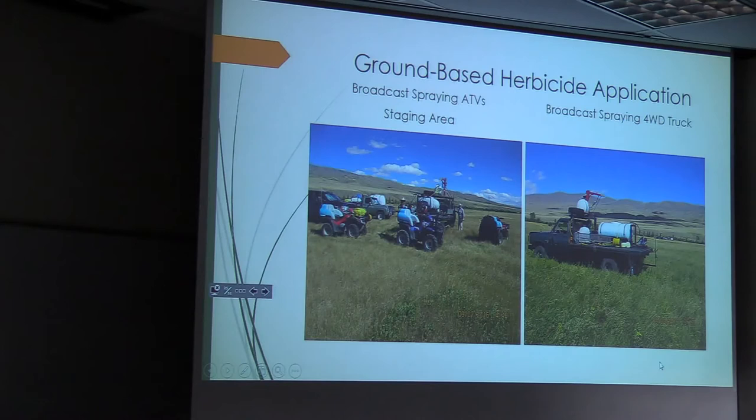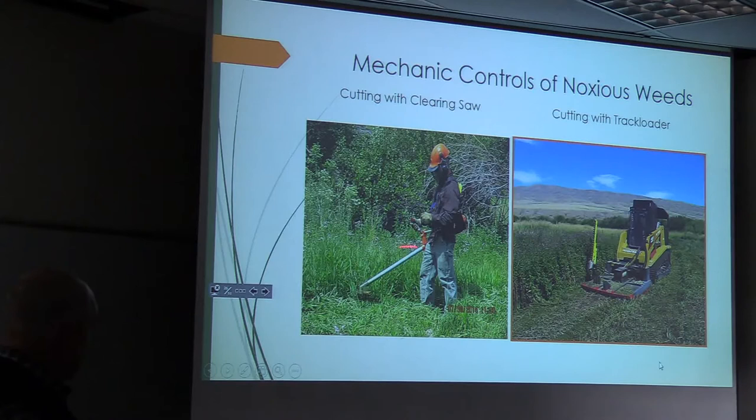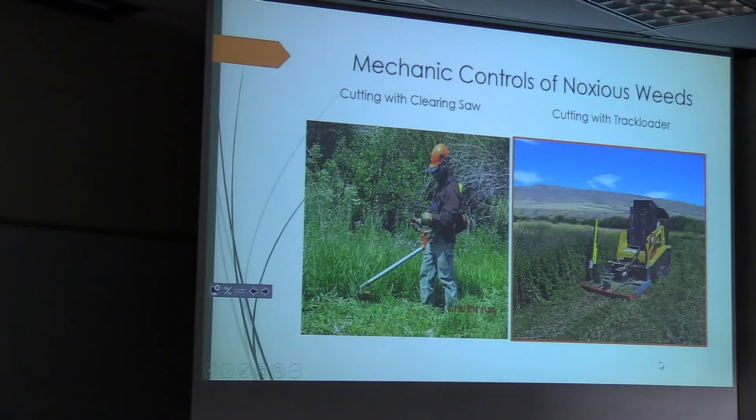For mechanical control options, we use a clearing saw for very precise decimation of these plants, as well as a machine with a sickle bar and brush cutter. Through cutting, you're starving the plant — reducing the carbohydrate content of the above-ground biomass so it can't feed itself in the fall when it wants to draw carbohydrates into the roots. You're also eliminating its ability to photosynthesize, so there's a lot of utility in certain species to just cut the weeds.